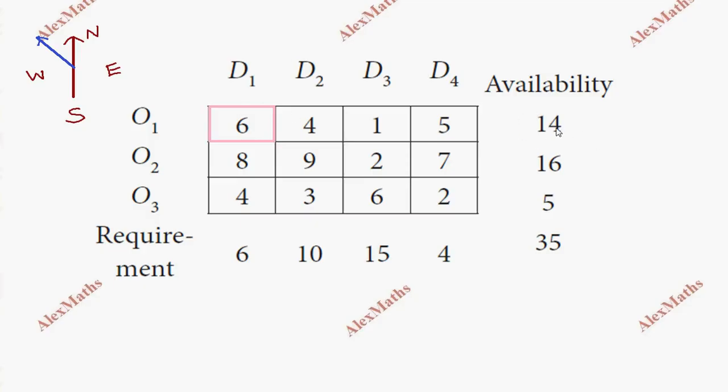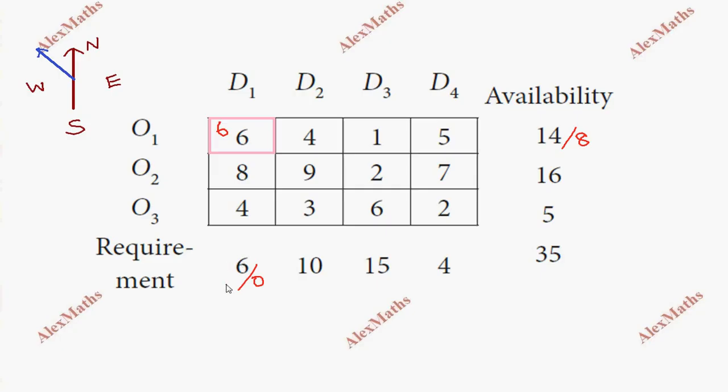The availability is 14 and the requirement is 6. We can supply 6 units from the 14 available. The requirement becomes 0, and the balance is 14 minus 6 equals 8. This is the first allocation. Once the requirement is 0, we cancel this column.